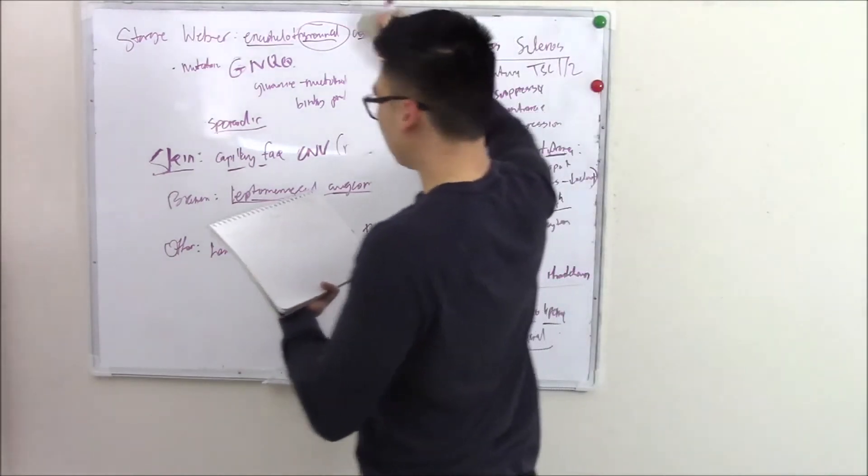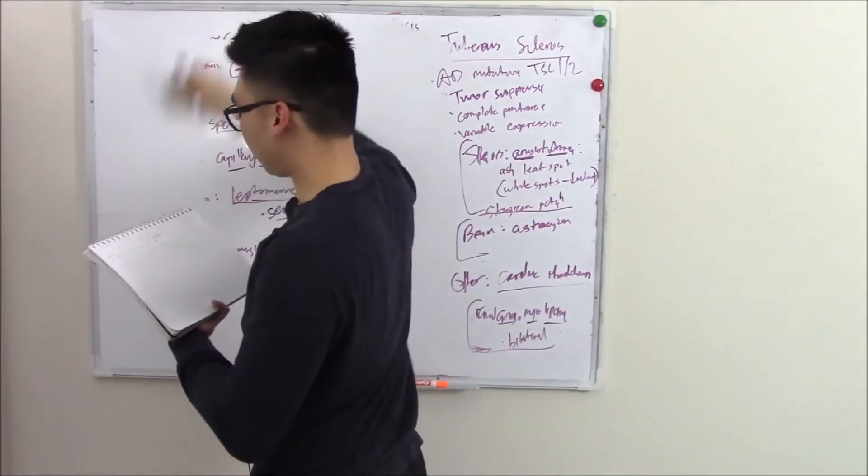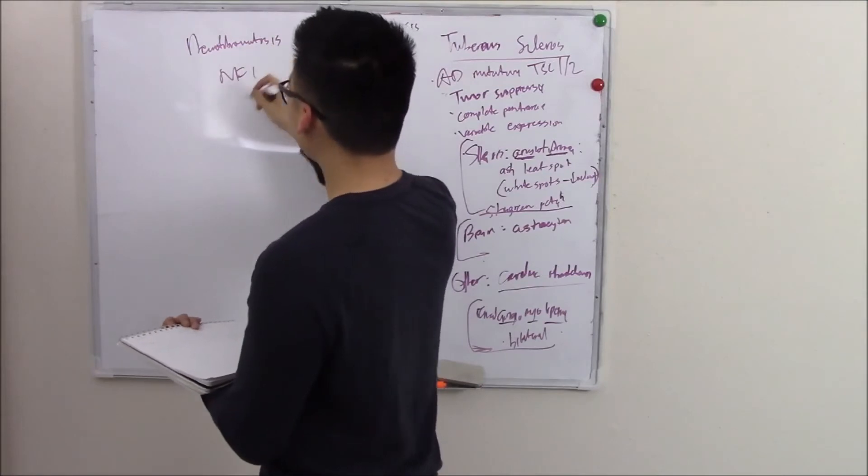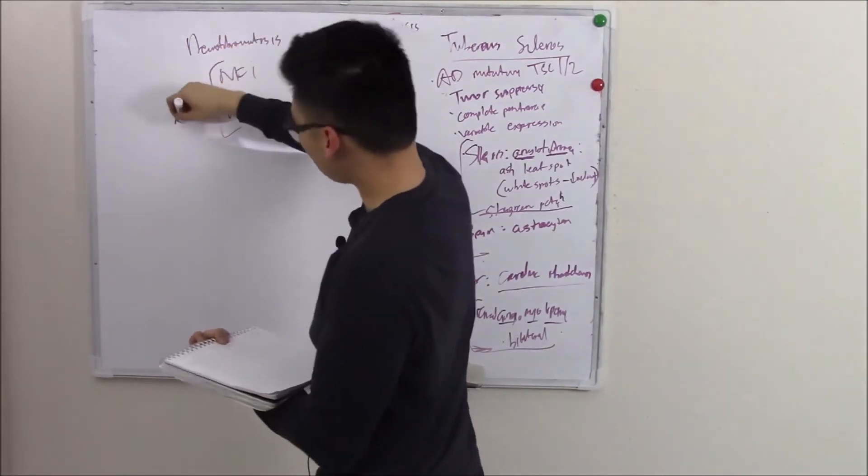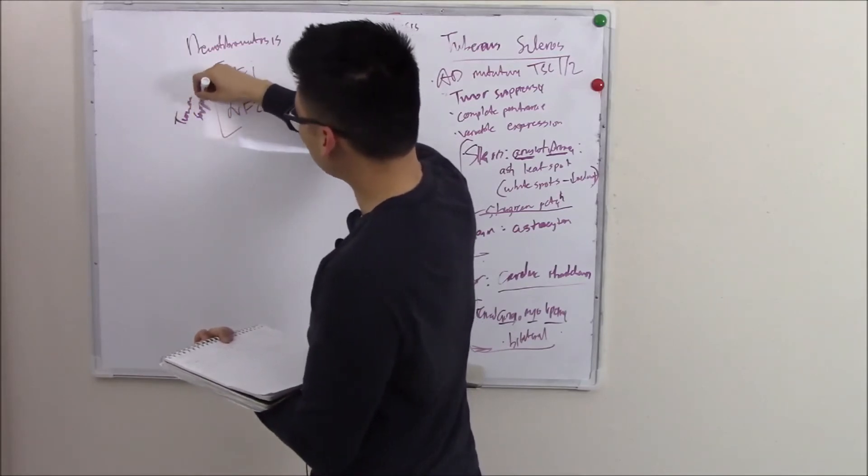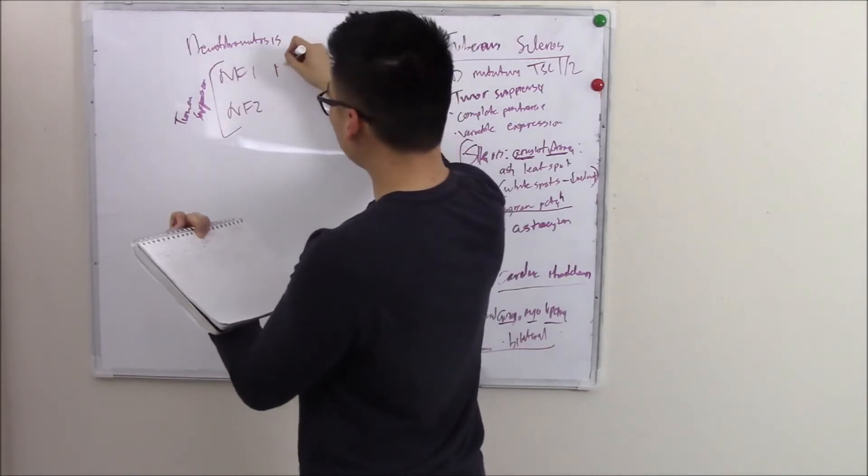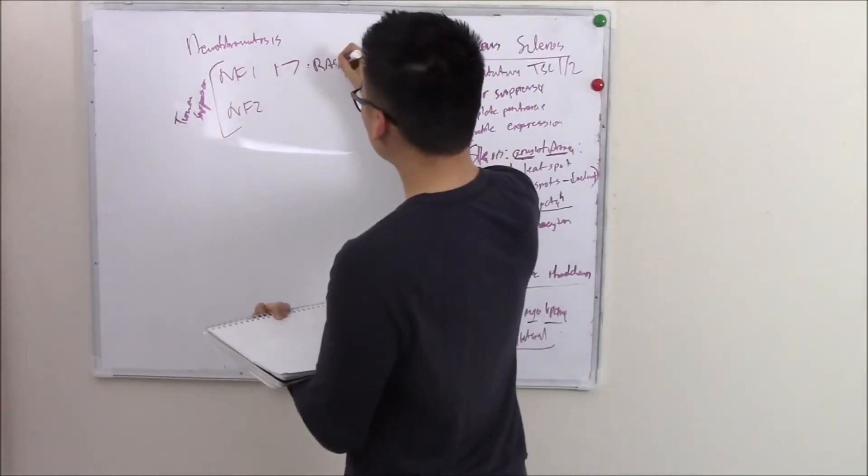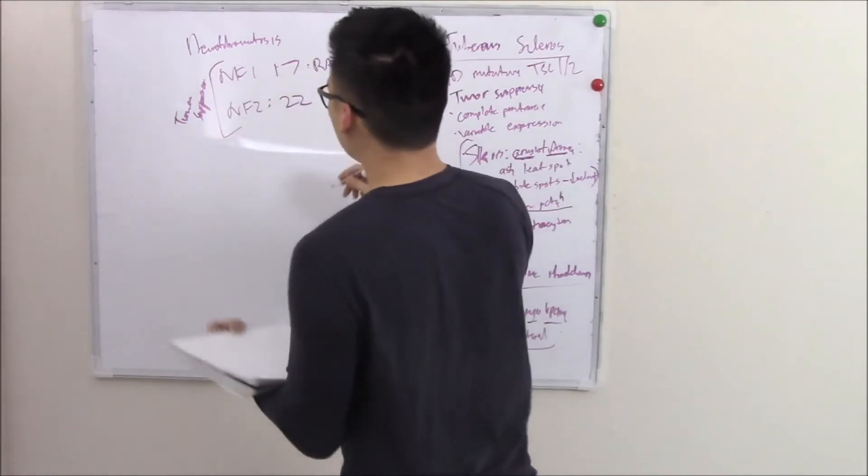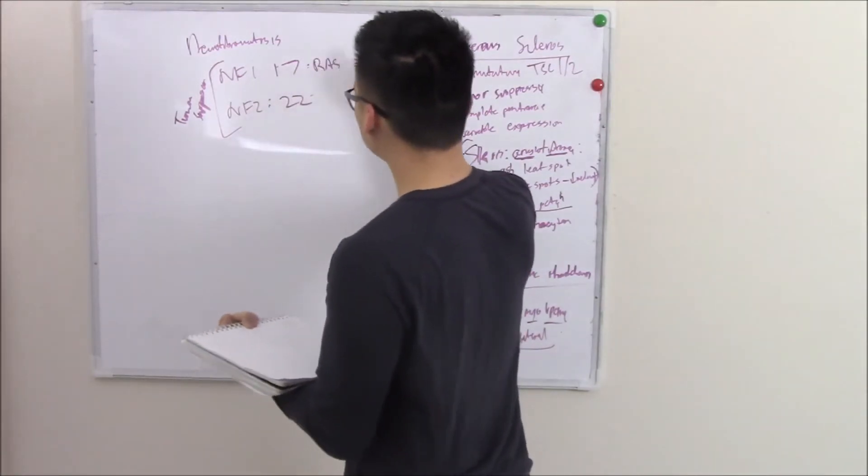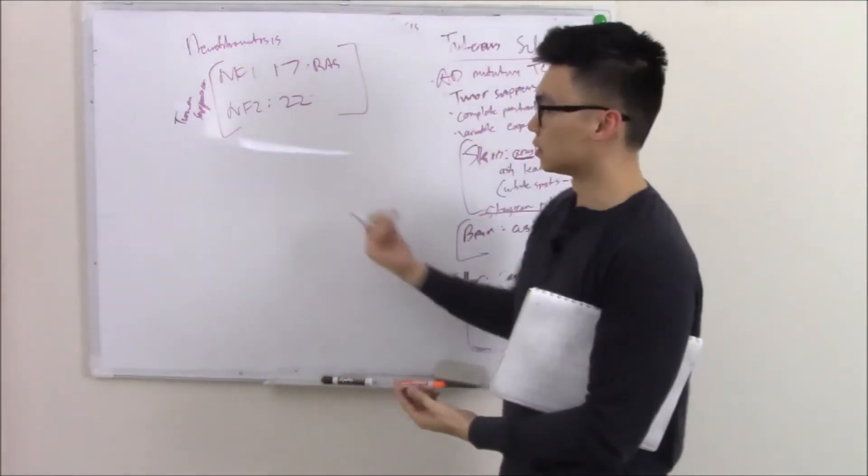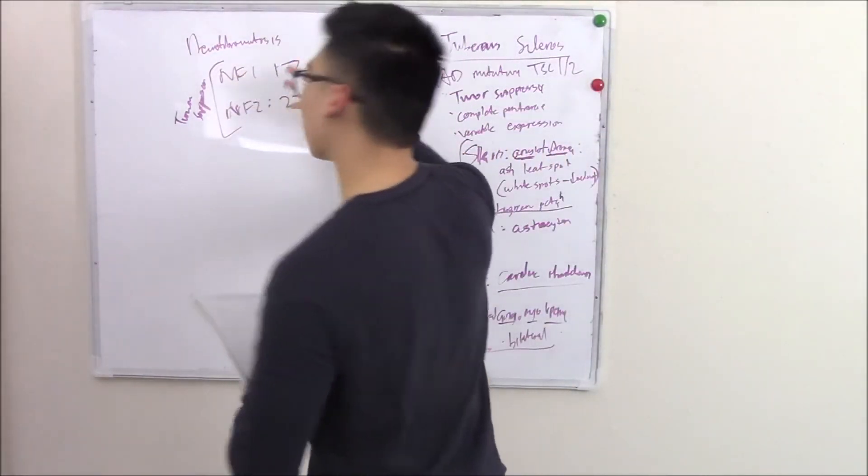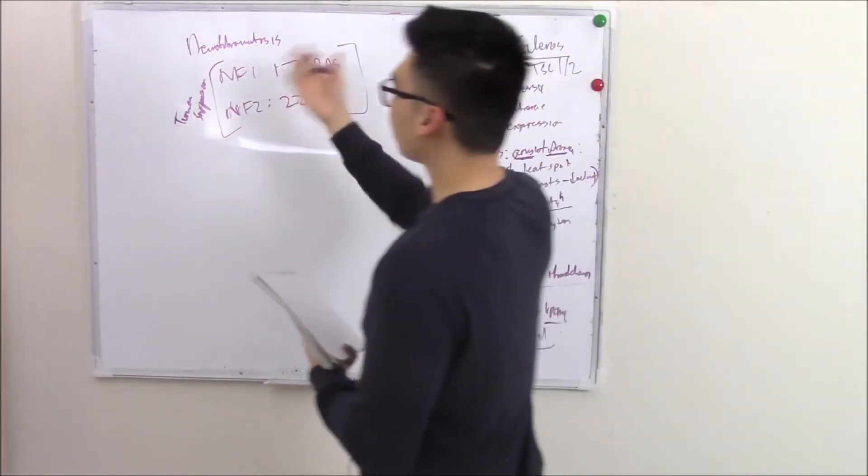That is tuberous sclerosis. Let's move on to our third one: neurofibromatosis. There are two types of this, NF1 and NF2. Both are mutations in tumor suppressor genes. NF1 will affect chromosome 17 and the protein that regulates the RAS pathway, the cell signaling pathway. NF2 affects chromosome 22. You don't particularly need to know the mechanism, but they're both problems with your tumor suppressor. Just know it affects different chromosomes and that's why they have different subtypes.